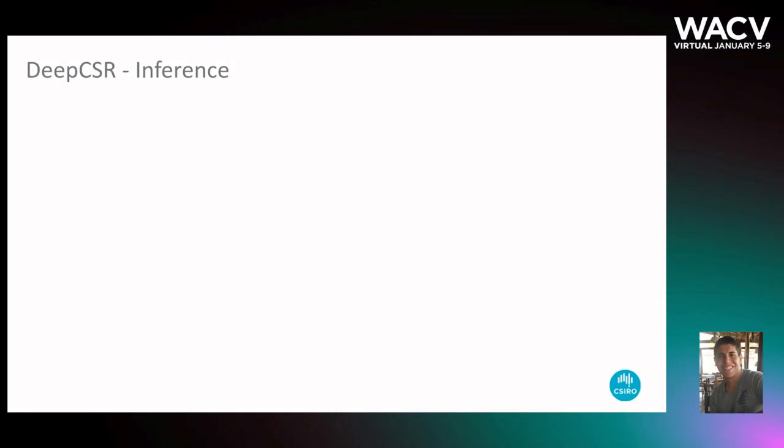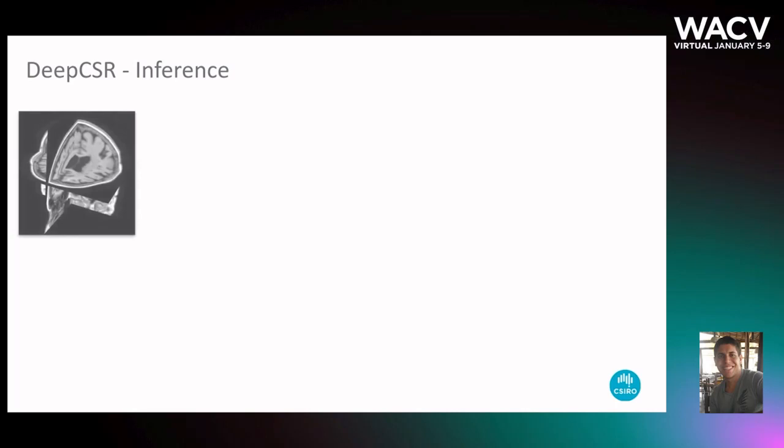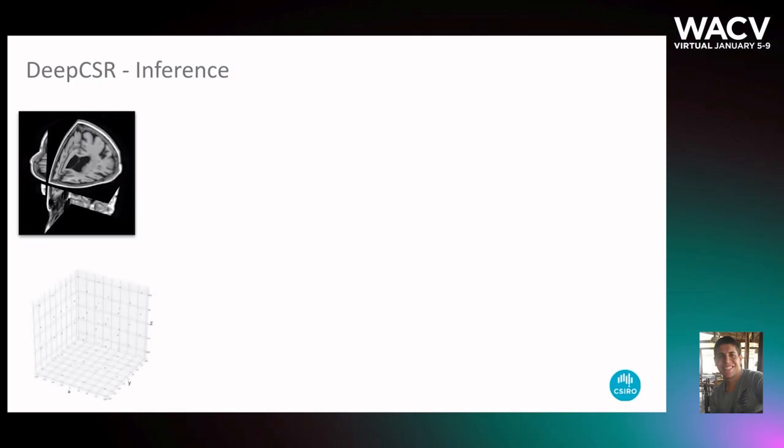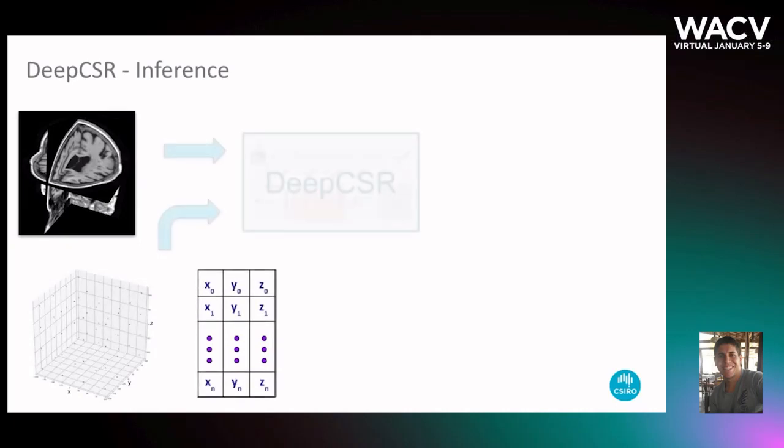Once learned, we use this network to predict implicit surface representations from new MRIs. More specifically, given a new MRI, we sample equidistant points in the brain template and pass their coordinates to the network to obtain the implicit representation of the target surface.